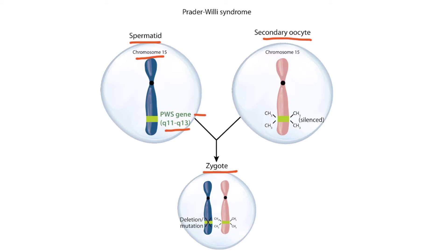Recall that the short arm of the chromosome is denoted by a P, and the long arm is denoted by a Q. The paternal PWS gene is normally active, but the maternal PWS gene is normally silenced. Notice the methyl groups shown on the maternal region. In Prader-Willi syndrome, the paternal PWS gene is deleted or mutated. Because the maternal gene is silenced and the paternal gene is defective, the offspring will not inherit a functional PWS gene, which will result in Prader-Willi syndrome.